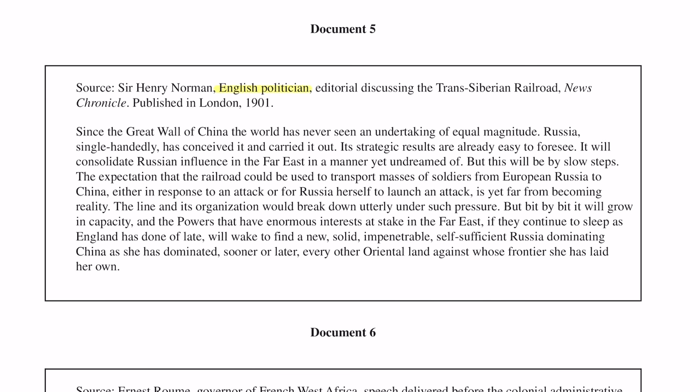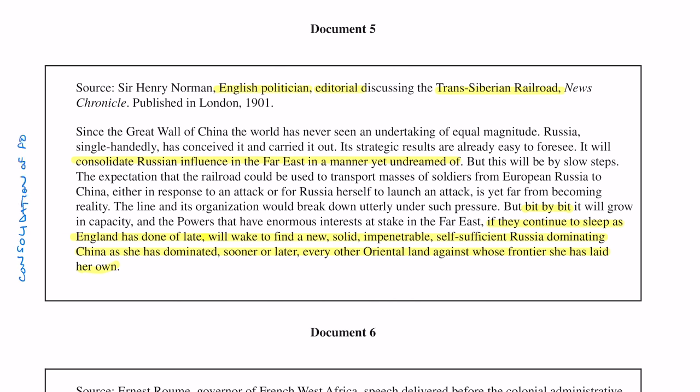Document five is from an English politician in an editorial discussing the Trans-Siberian Railroad. He's saying that with completion of construction, it will consolidate Russian influence in the Far East in a manner yet undreamed of — and that European powers, if they continue to sleep as England does, will wake to find a new, solid, impenetrable, self-sufficient Russia dominating China as she has dominated every other oriental land whose frontier she has laid her hands on. This document is tricky because it's an English writer talking about a Russian railroad, trying to convince the British reading public they need to stop sleeping and protect their interests in the East — so this is about consolidation of power in foreign lands.